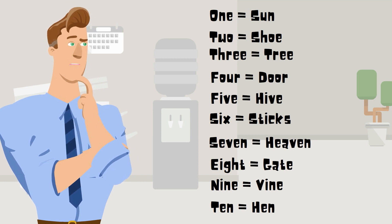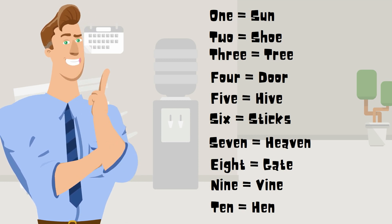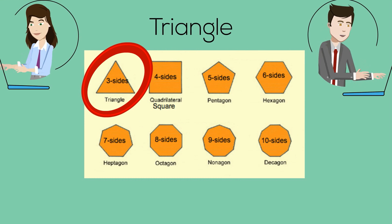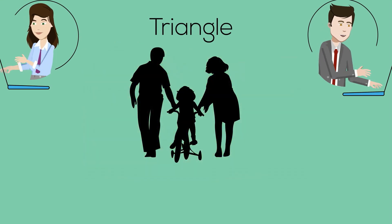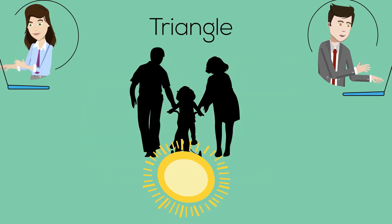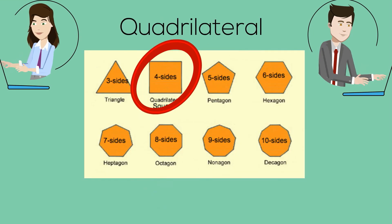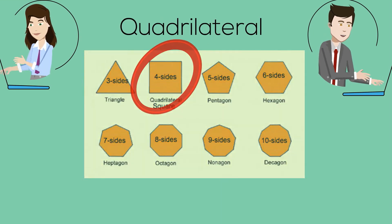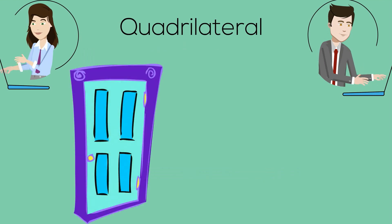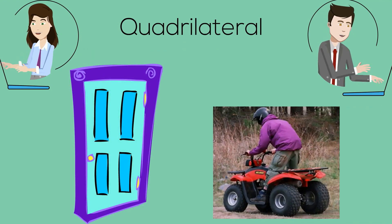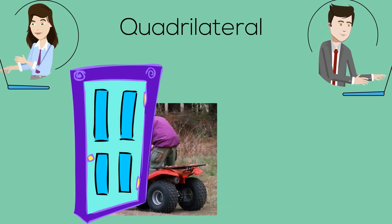Let's get started. A 3-sided polygon is a triangle. Imagine someone riding a tricycle on the sun. 4 is a quadrilateral, so imagine someone riding a quad vehicle and busting down a door.